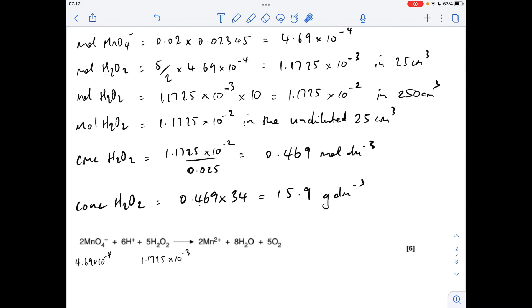Now the question doesn't specify which units it wants the volume of oxygen in, so I'm going to multiply by the molar gas volume in decimeters cubed, so I'm multiplying this by 24, which gives me a volume of oxygen at RTP of 0.0281 decimeters cubed.